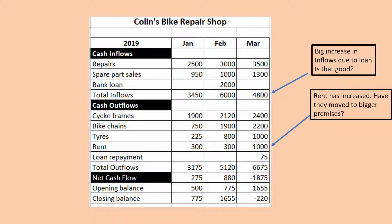Secondly, if we look here, the rent figure has gone from £300 to £1000. So they might have moved to bigger premises. Perhaps they did — their sales went up slightly, so we'll see what happens.